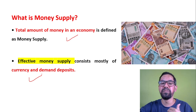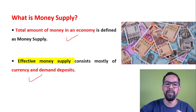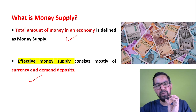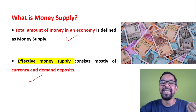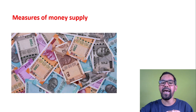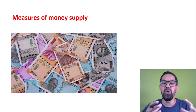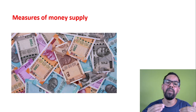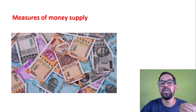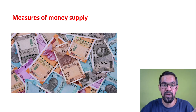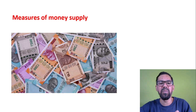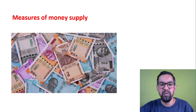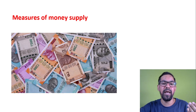Now, if you study the different methods generally used for money supply calculations, we have a broader concept known as M1, M2, M3, and M4, which was generally adopted by RBI in 1977. Prior to this, we used the narrower concept, which was essentially M1 only.